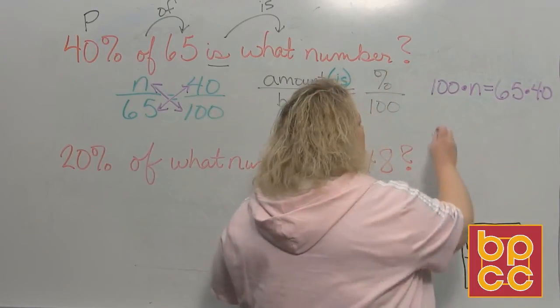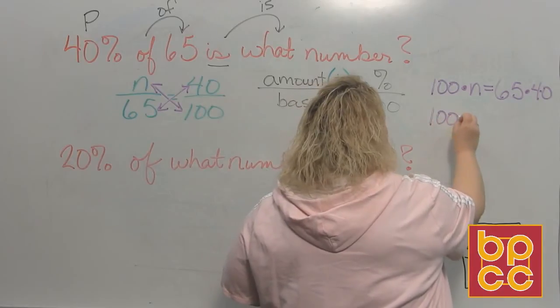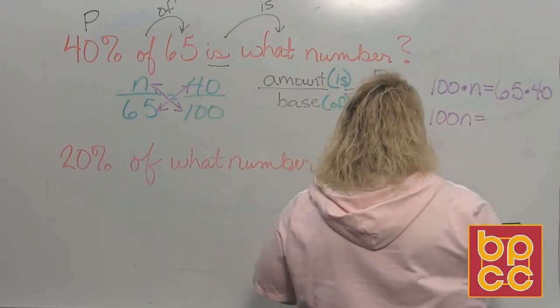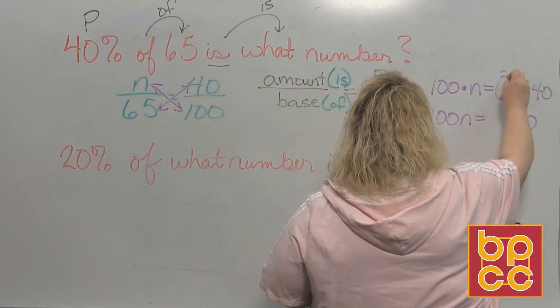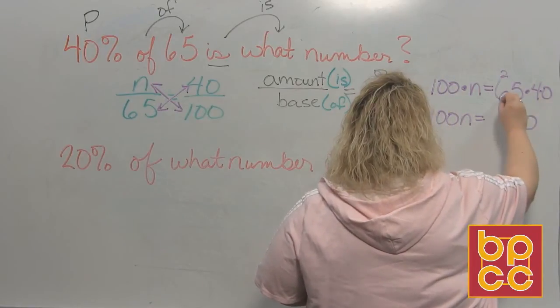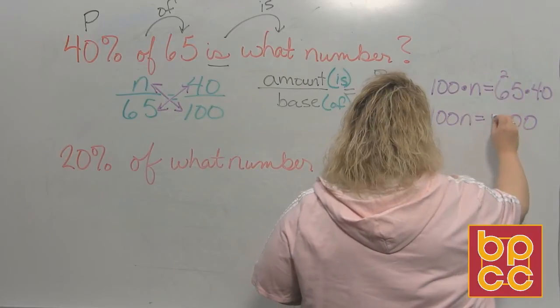So when we do that, we have 100n is equal to 65 times 40. That would be 5 times 4 makes 20, 4 times 6 is 24 plus 2 is 26.